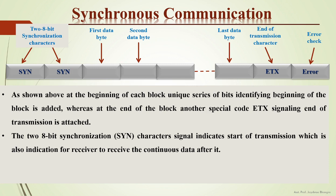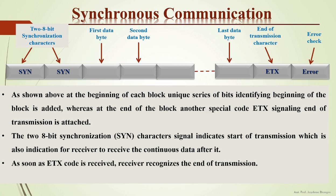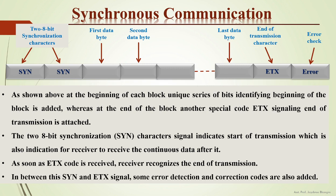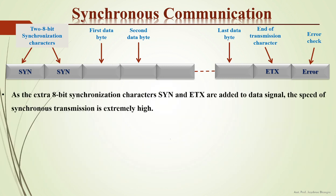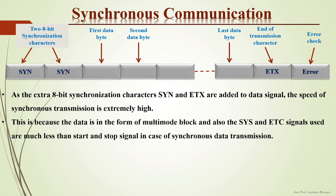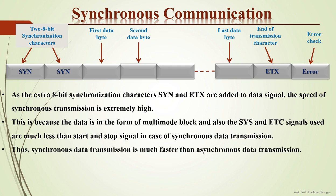The two 8-bit synchronization characters signal the start of transmission, indicating to the receiver to receive the continuous data. As soon as the ETX code is received, the receiver recognizes the end of transmission. Between the synchronization characters and the ETX signal, error detection and correction codes are also added. Because the SYN and ETX signals are much fewer than the start and stop bits used in asynchronous transmission, synchronous data transmission is extremely fast and much faster than asynchronous data transmission.